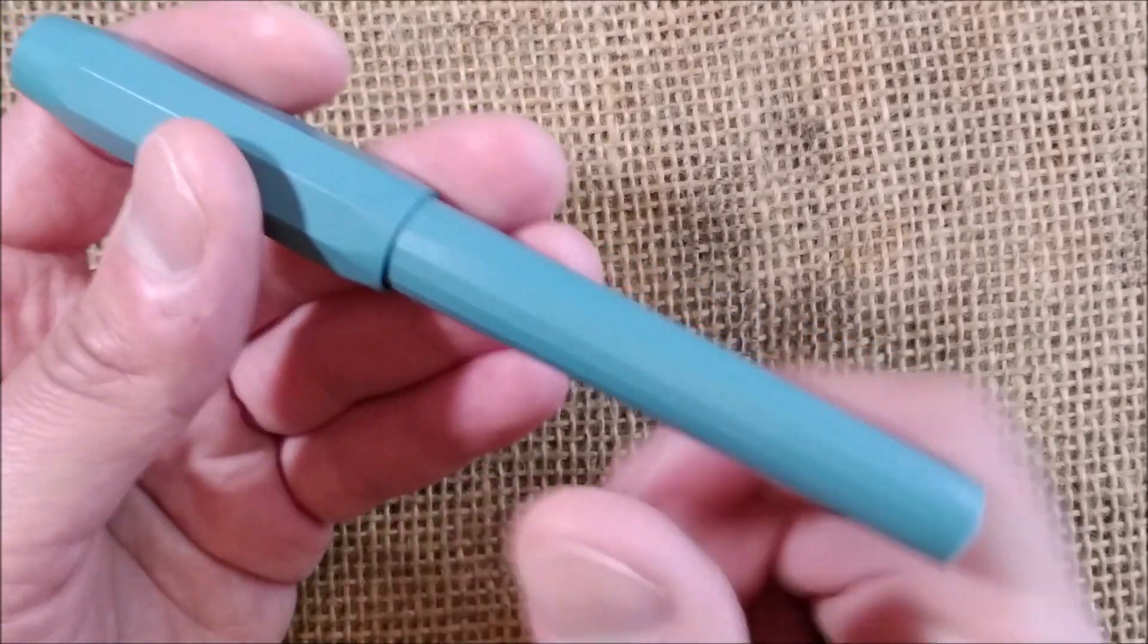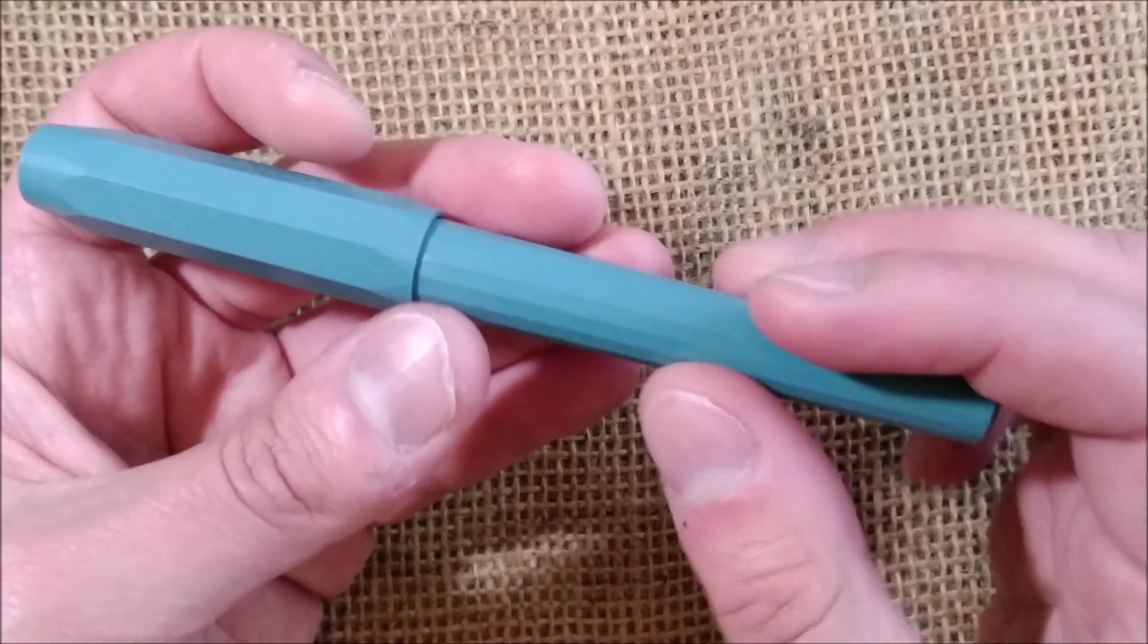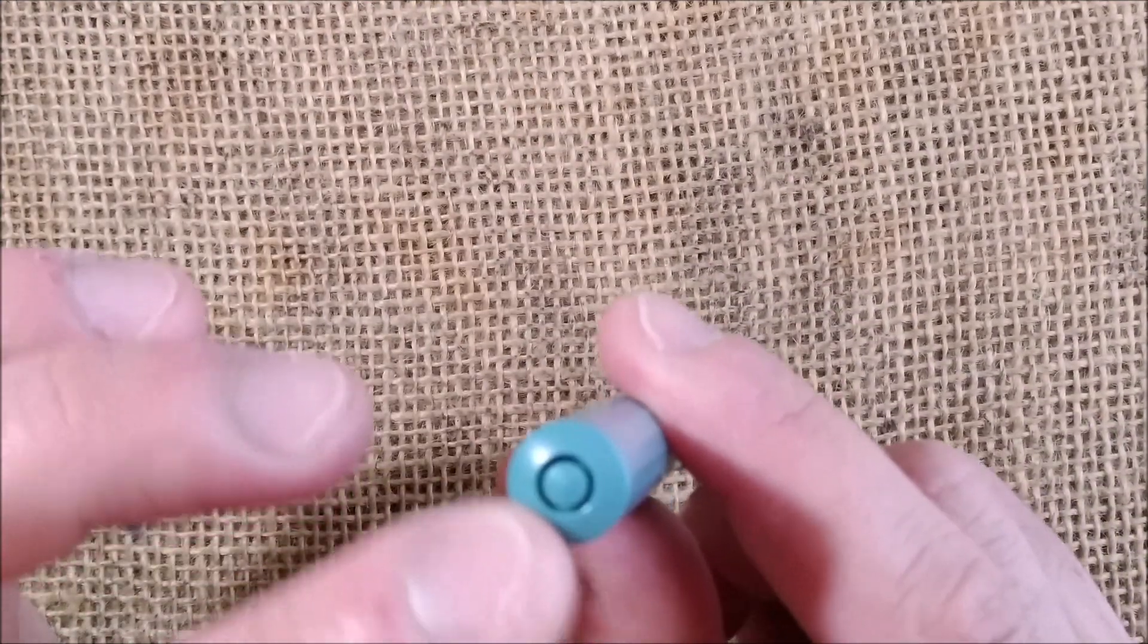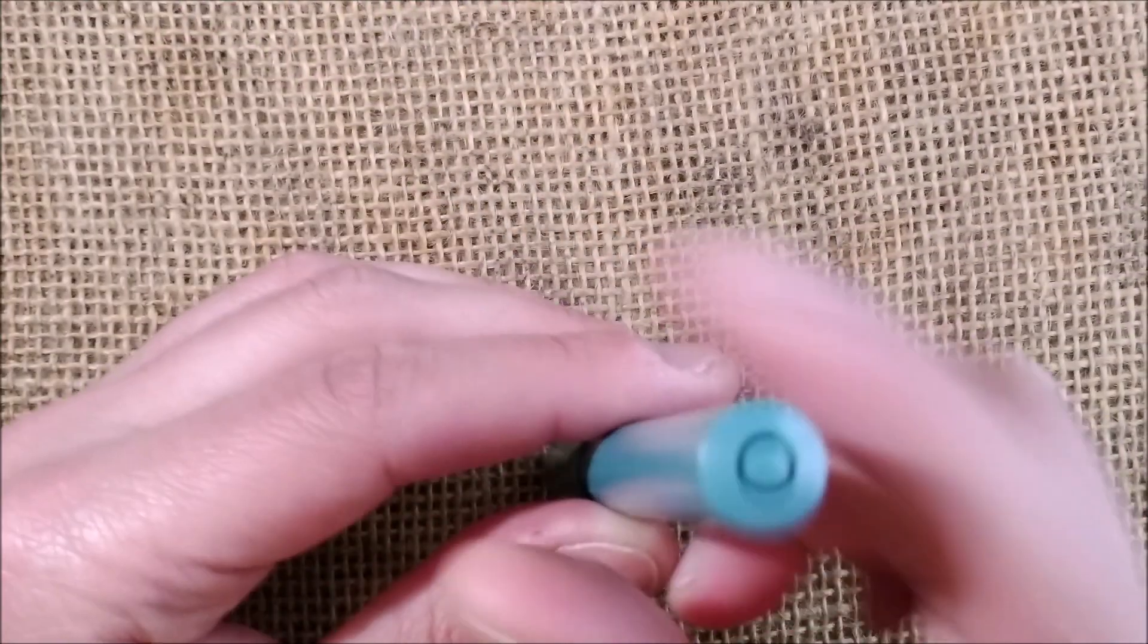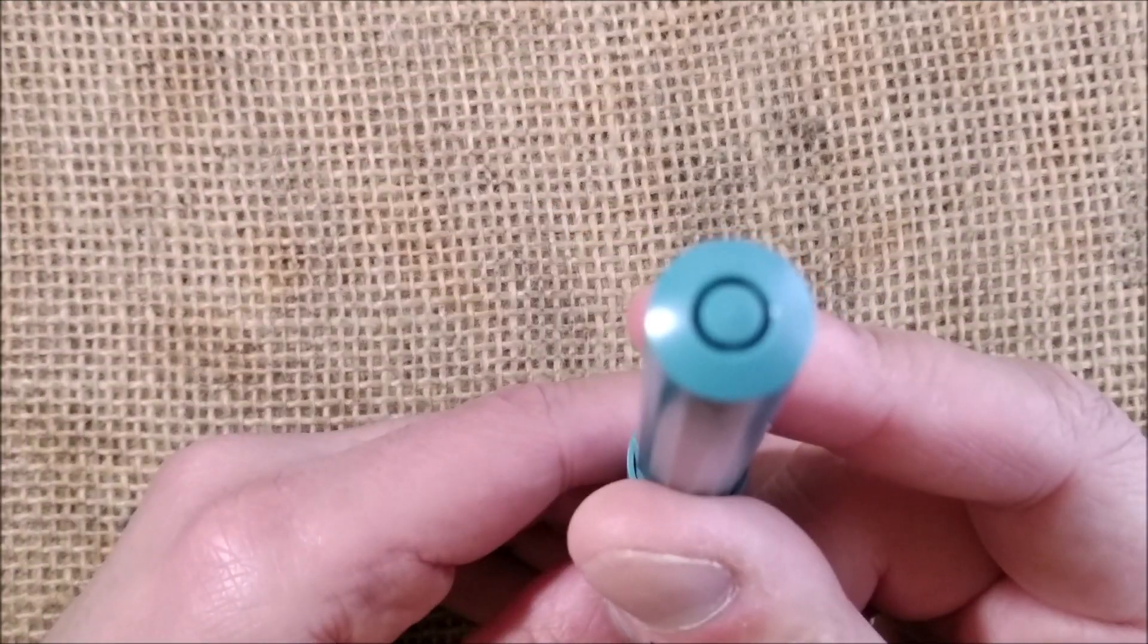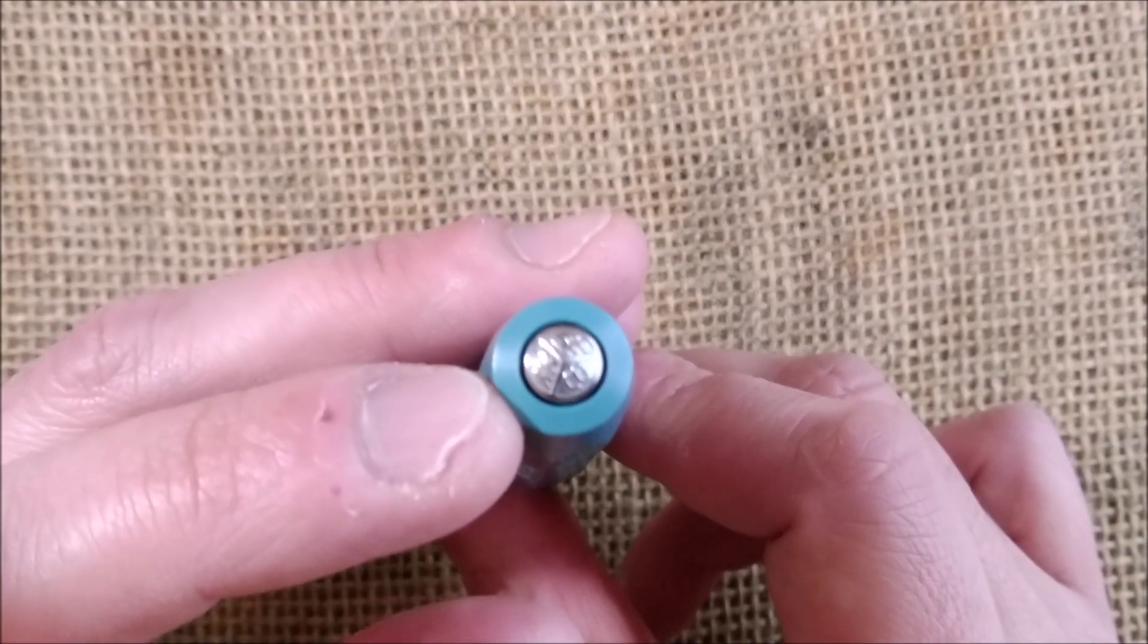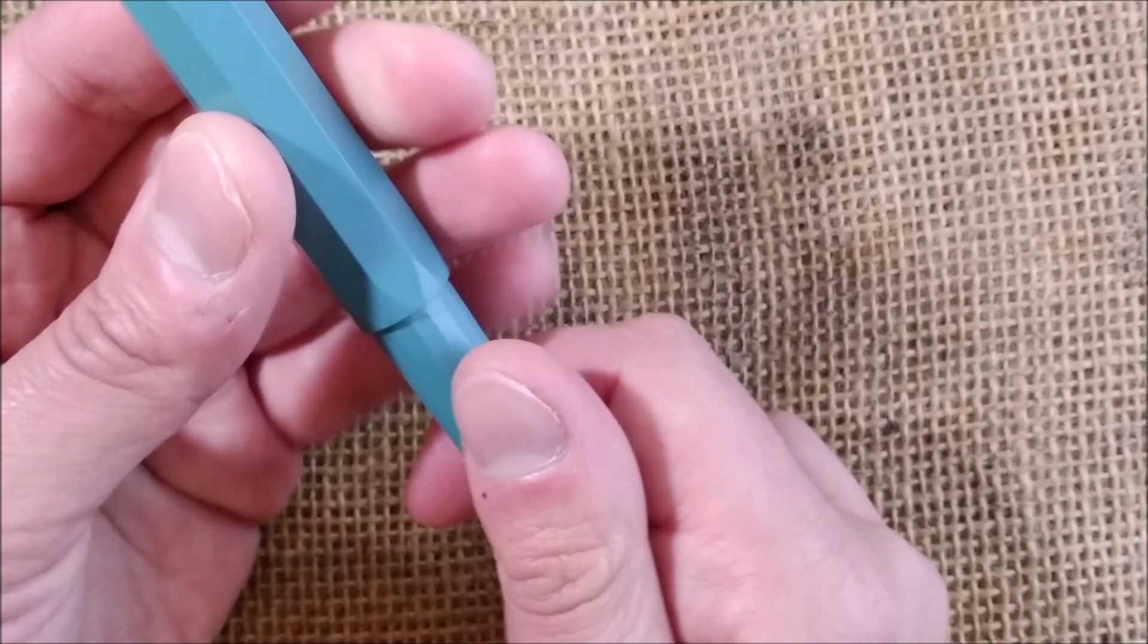Then you have the barrel, which is also faceted. But it has 16 facets instead of being round. Then it has some breather hole there. Because this is a school pen, it is to avoid any children to suffocate if they try to hit the pen, to swallow the pen, and also there is that hole around the logo on the top.